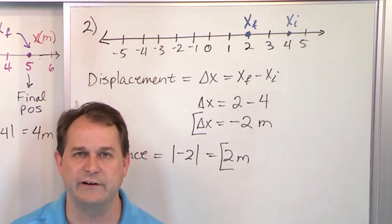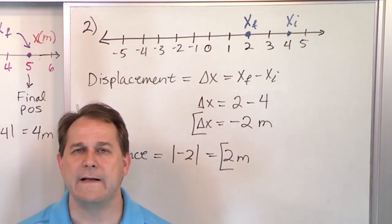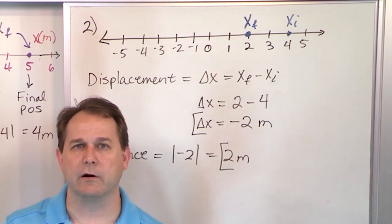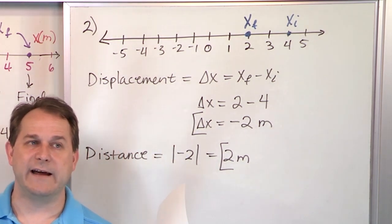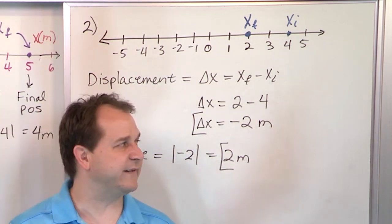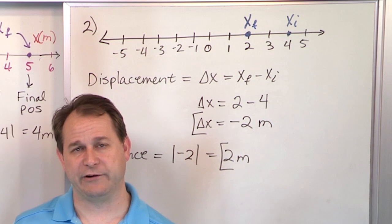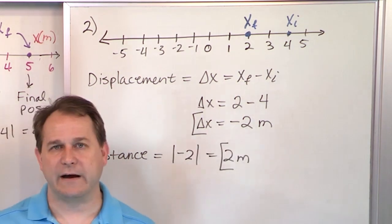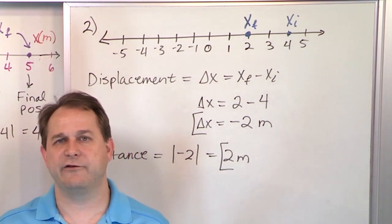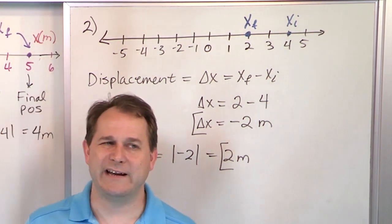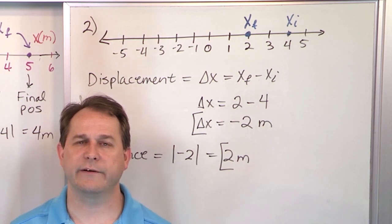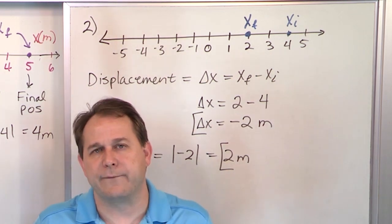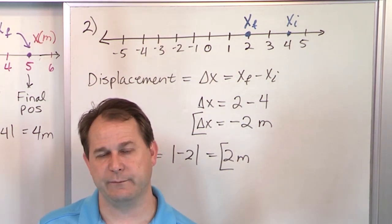Because displacement carries direction info — to the right is positive, to the left is negative — we're going to learn that displacement is actually what we call a vector quantity. A vector quantity is just a value that has a magnitude (how big the number is — in this case it was two) and also some direction information. Anything with magnitude and direction is called a vector quantity. So displacement is a vector quantity. Distance is not a vector quantity because it tells you how far you moved but has no information about which direction — so it's not a vector quantity.